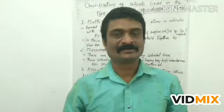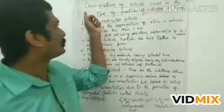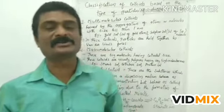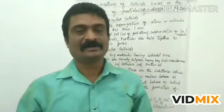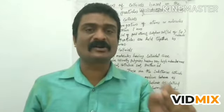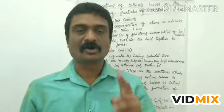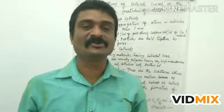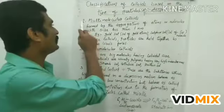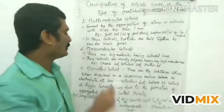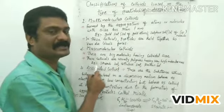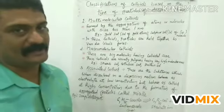Today I am going to discuss the topic: classification of colloids based on the type of particles of the dispersed phase. On the basis of the type of particles of the dispersed phase, colloids can be classified into three types: number one, multi-molecular colloids; number two, macromolecular colloids; and number three, associated colloids.